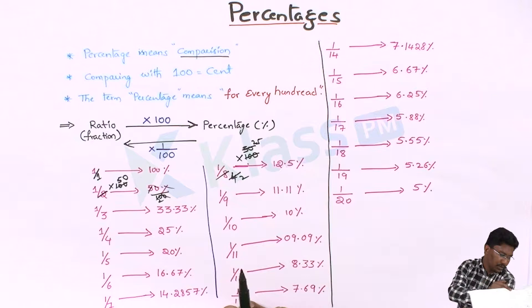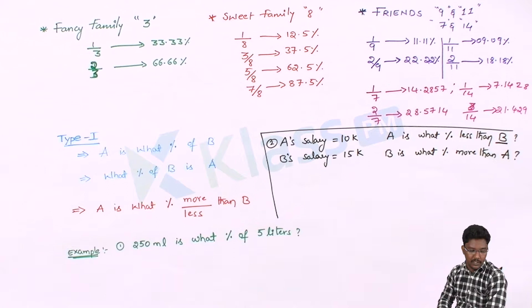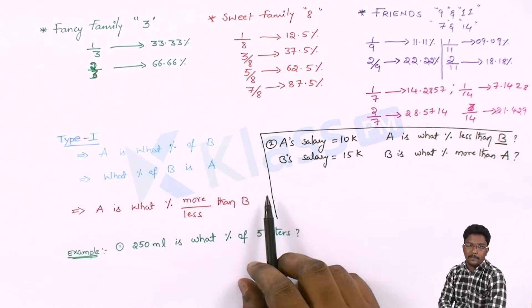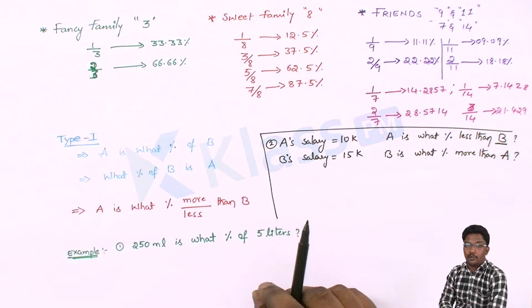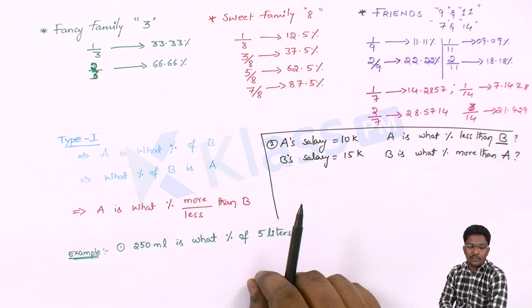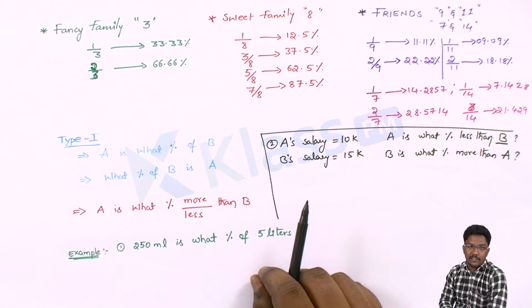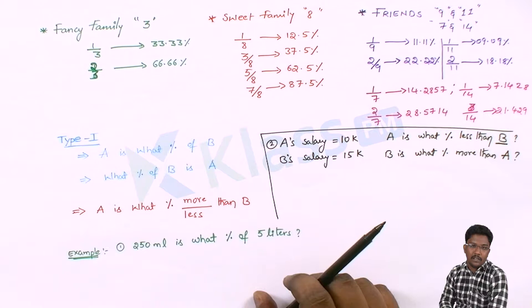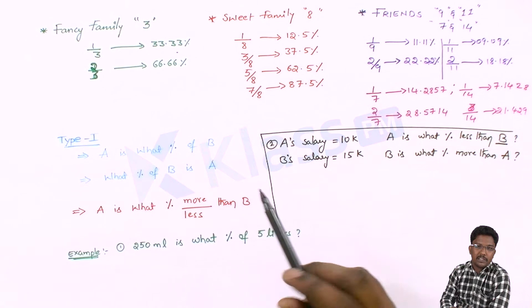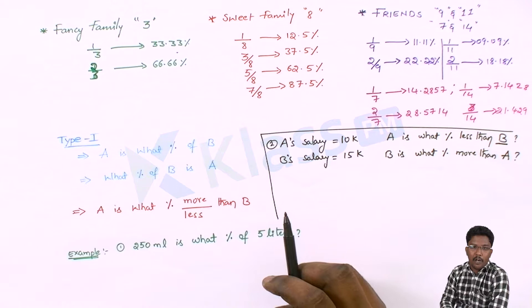Here is the trick — we remember these values with a small story. Three belongs to a 'fancy family.' 1/3 is 33.33%, 2/3 means 66.66%. These are approximate values, not perfect values. Observe these values — these are fancy numbers, like celebrities' vehicle numbers with all nines, all sixes, all sevens. When the denominator is 3, converting to percentage gives a fancy repeating number.